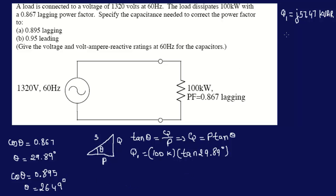So Q2 is, same thing, Q2 equals 100k tangent of 26.49 degrees. So Q2 is calculated as J49.84 kVAR. Again, you can peer check my calculations.